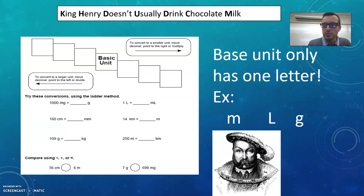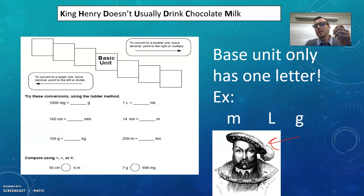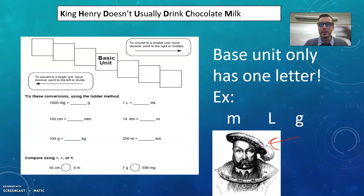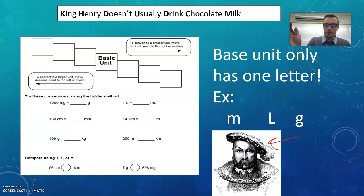What I want you to remember is this terrible guy right here — King Henry. King Henry was a really bad guy. He would get a wife and say, "Not good enough," and just kill them and get another one. It was really bad history.